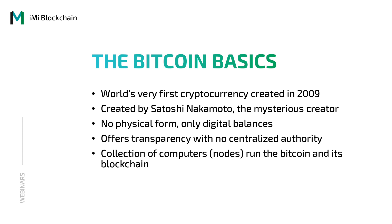A cryptocurrency is a currency comprising no physical form and only digital balances. With no centralized authority, they offer transparency unlike fiat currencies. The Bitcoin and its blockchain network is run by a collection of nodes — computers connected to the same network.